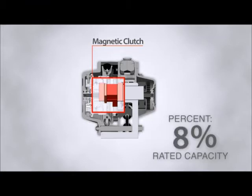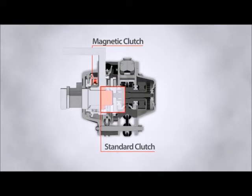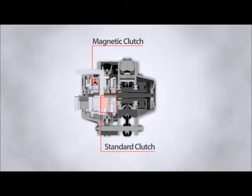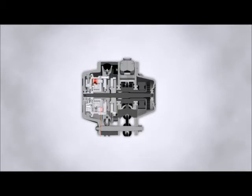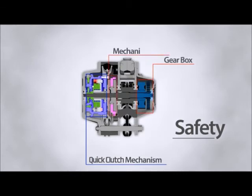Once a load heavier than approximately 10% of rated capacity is applied, the magnetic clutch releases and a standard clutch engages. The hoist will now operate in standard speed mode. Rest assured that this hoist is designed for safety. The quick clutch mechanism is external to the gearbox and separate from the mechanical brake, ensuring independence from your hoist's most important safety features.